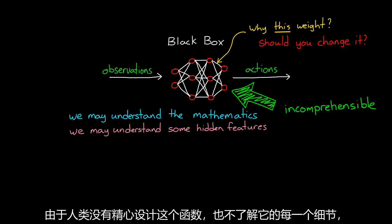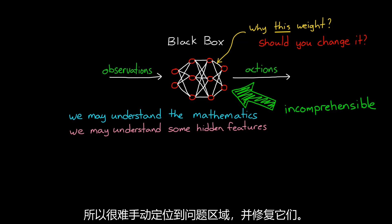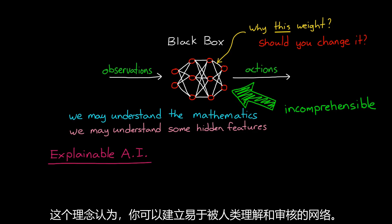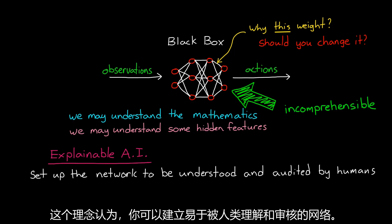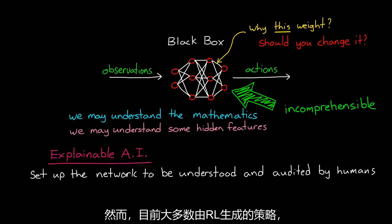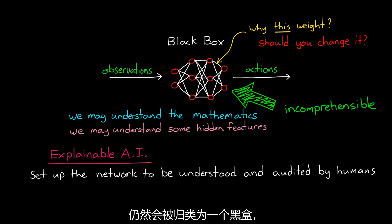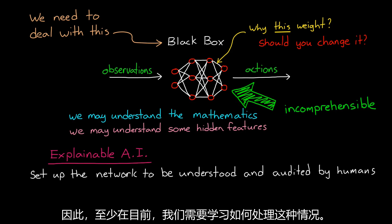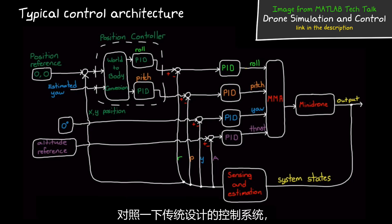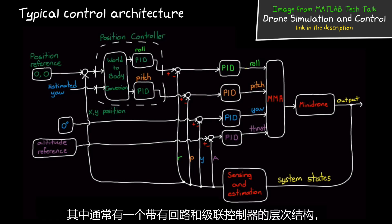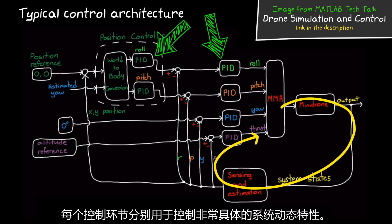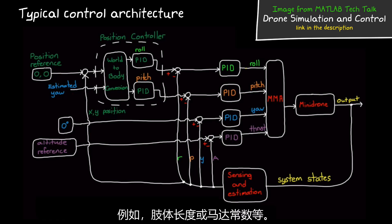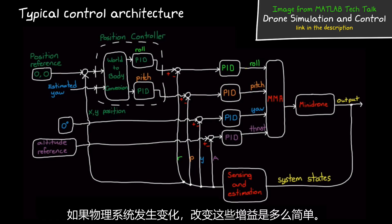Since a human didn't craft this function and doesn't know every bit of it, it's difficult to manually target problem areas and fix them. There is active research pushing the concept of explainable artificial intelligence — the idea that you can set up your network so that it can be easily understood and audited by humans. However, at the moment the majority of RL-generated policies would still be categorized as a black box. Contrast this with a traditionally designed control system, where there is typically a hierarchy with loops and cascaded controllers, each designed to control a very specific dynamic quality of the system. Think about how gains might be derived from physical properties like appendage lengths or motor constants, and how simple it is to change those gains if the physical system changes.